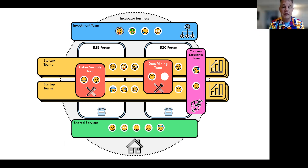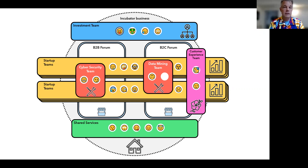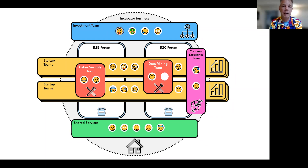Then there are multiple startup teams — again end-to-end scrum or kanban teams — trying to make new products. In this case they compete with each other to some extent, trying to solve the same problems perhaps in different ways. It's a friendly, healthy competition — may the best one win. Perhaps they have some cyber security or data mining experts. There could be one special team focusing on customer experience, helping run minimum viable products with the existing customer base of the larger enterprise. And probably there are shared services underneath offering services, mentoring, and help to the startup teams.